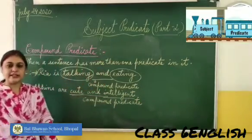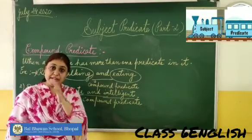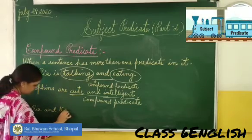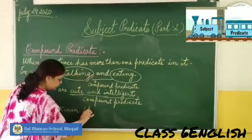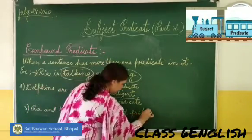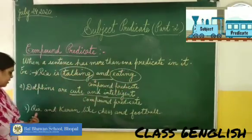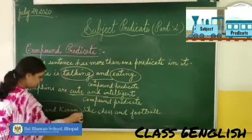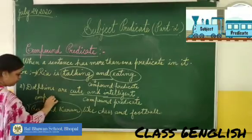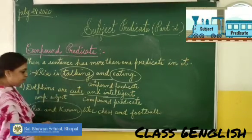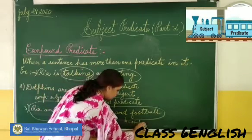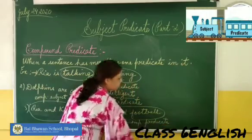Sometimes a sentence can have both compound subjects as well as compound predicates in it. For example: 'Ria and Karen like chess and football.' Here we have two subjects — Ria and Karen — connected with the conjunction 'and,' so this is a compound subject. Similarly, 'chess and football' are two words forming a compound predicate.